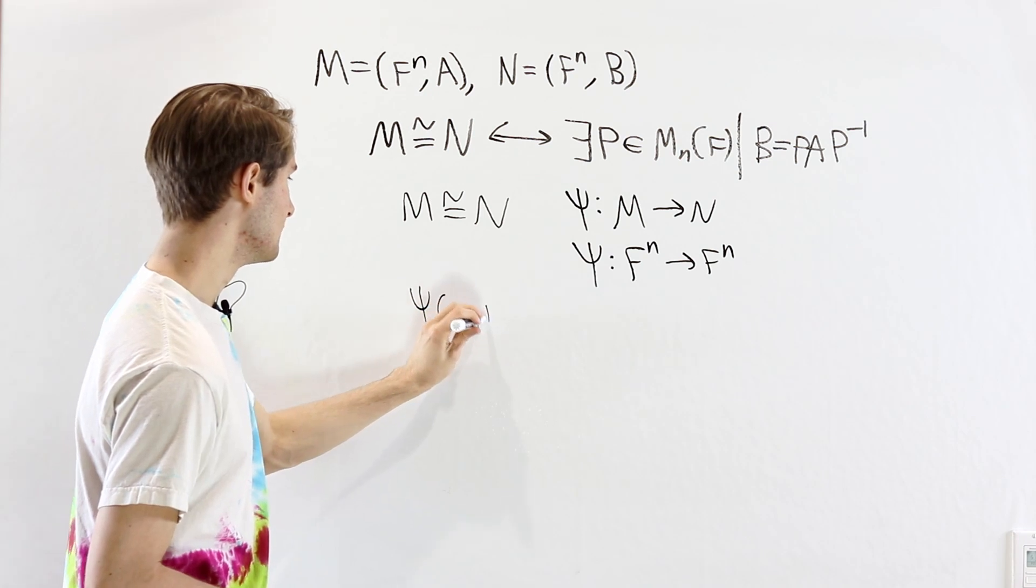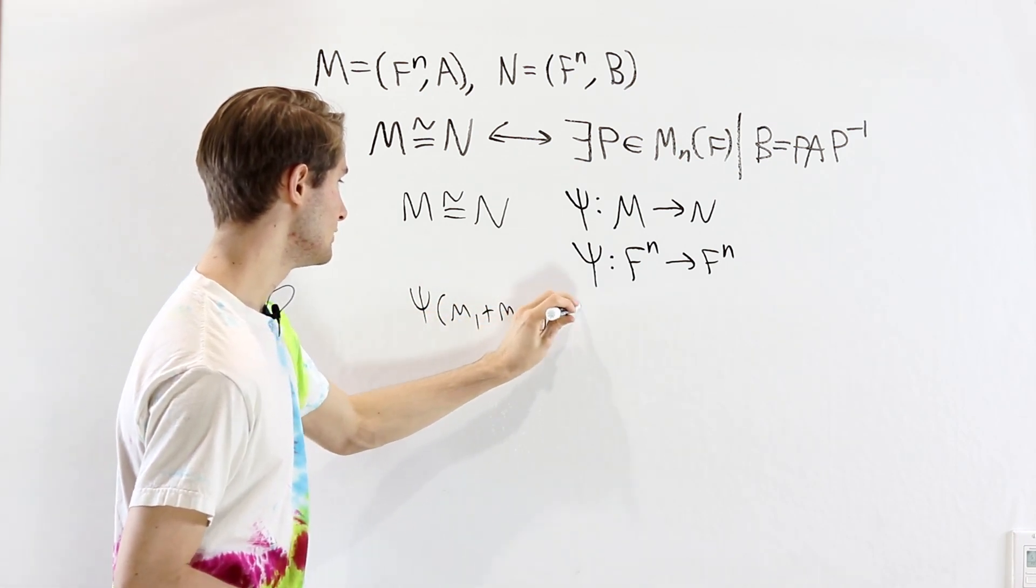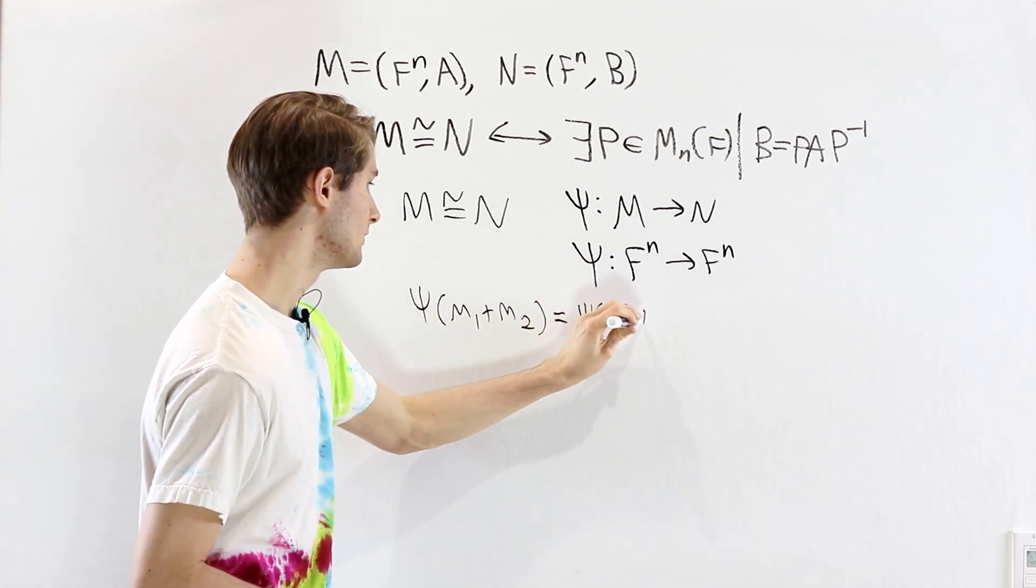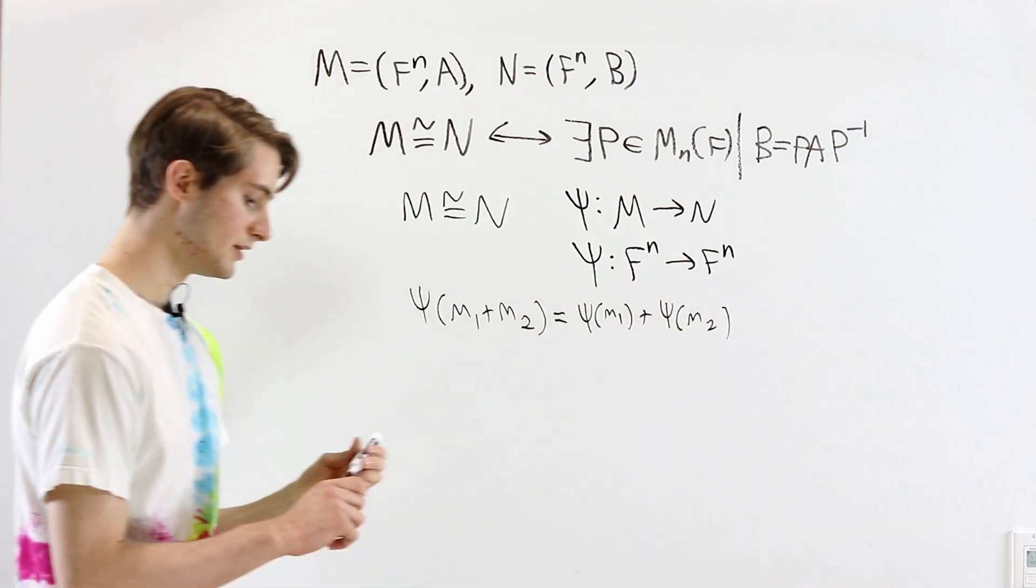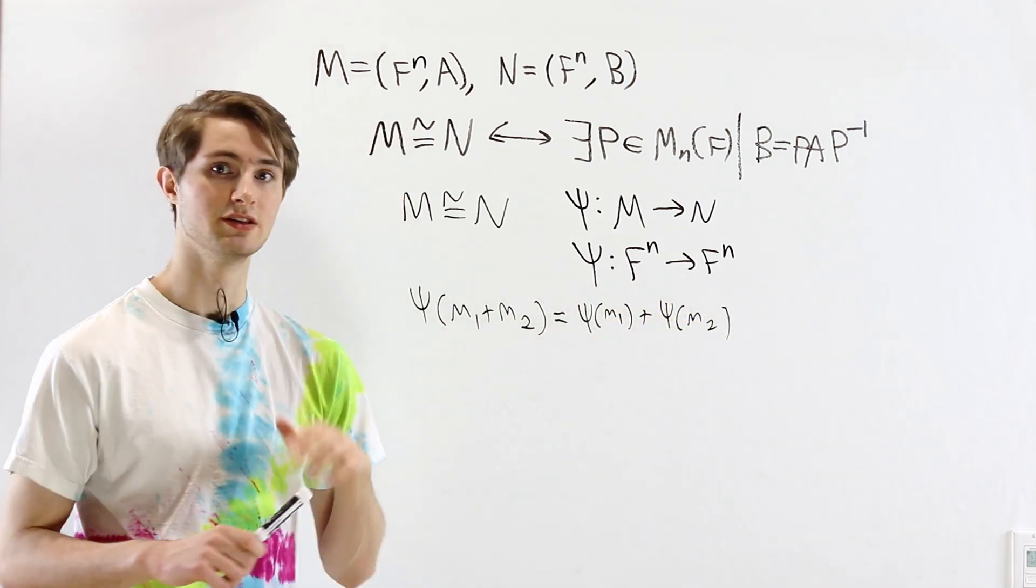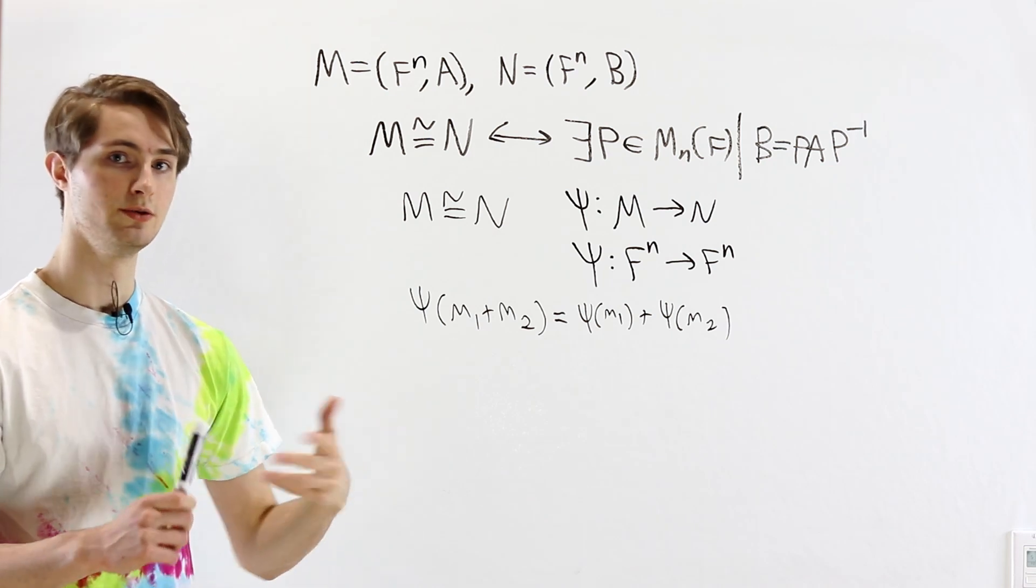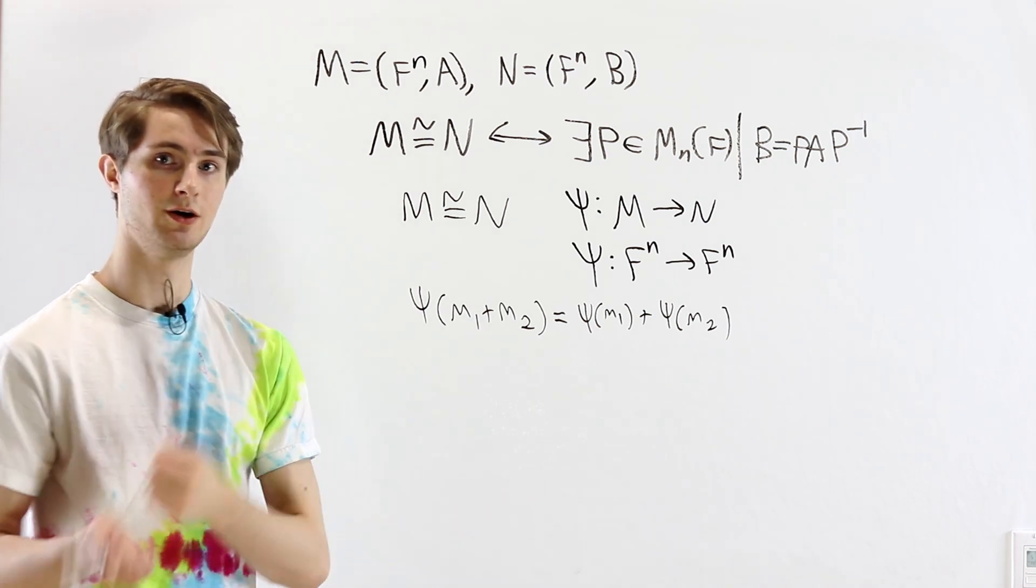We know that ψ of m1 plus m2 has to equal ψ of m1 plus ψ of m2. And we also know that ψ needs to be linear in polynomials in F so we can pull out polynomials.